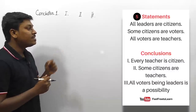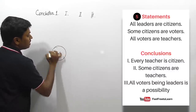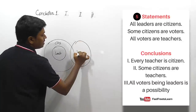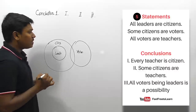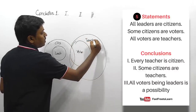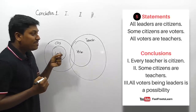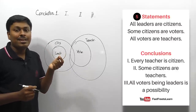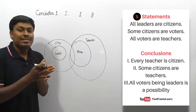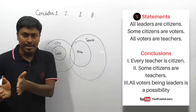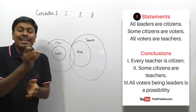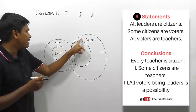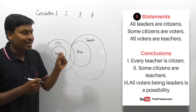Next question. Statements: 'all leaders are citizens,' 'some citizens are voters,' and 'all voters are teachers.' Conclusion number one: 'every teacher is a citizen.' The word 'every' denotes 'all,' just like 'each.' So we need to check: is all teacher a citizen? No — only some teachers are citizens. Since 'every' denotes 'all,' and all teachers are not citizens, conclusion one does not follow.